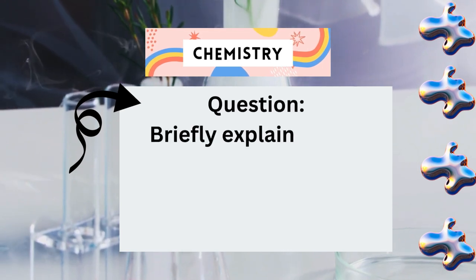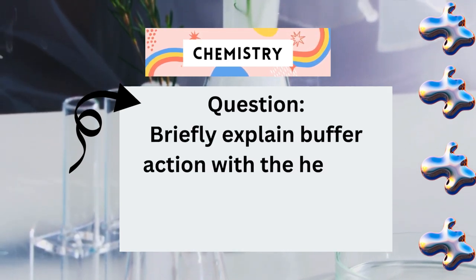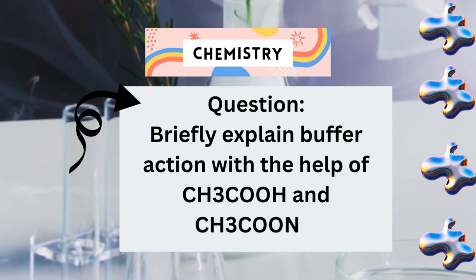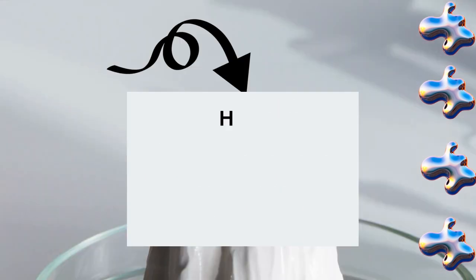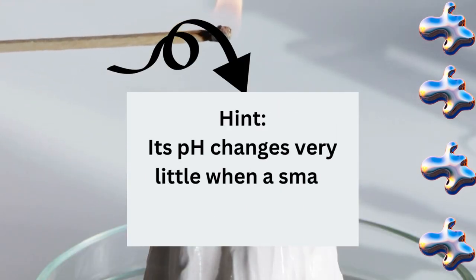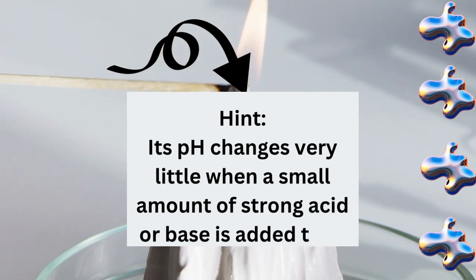Briefly explain buffer action with the help of acetic acid, CH3COOH, and sodium acetate, CH3COONa. Hint: its pH changes very little when a small amount of strong acid or base is added to it.